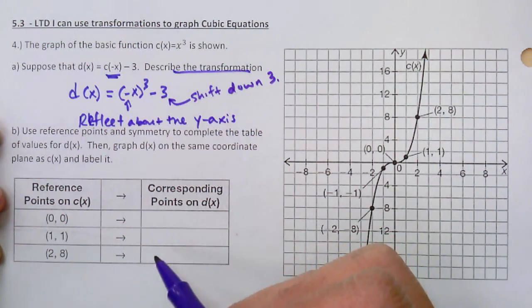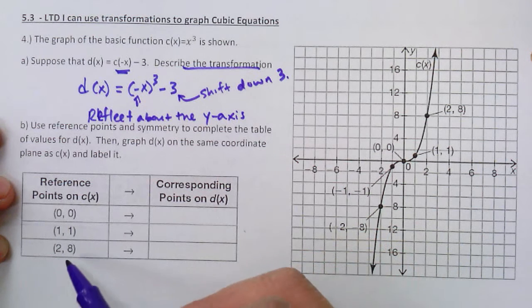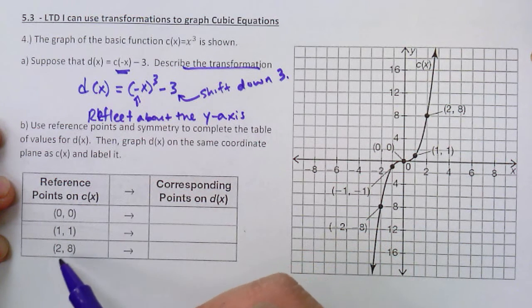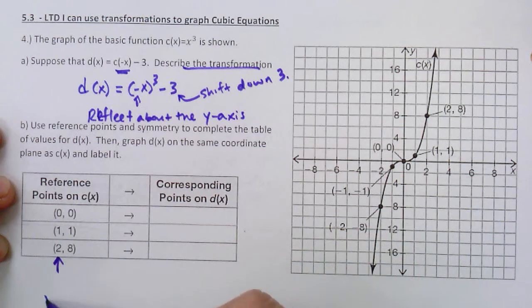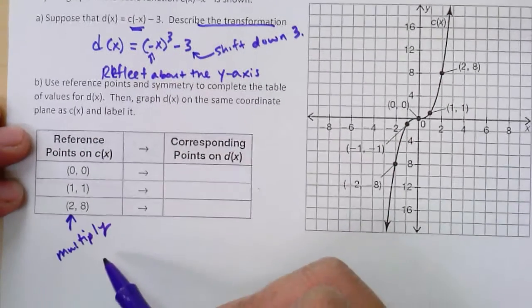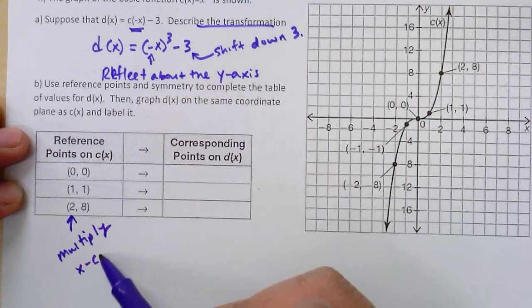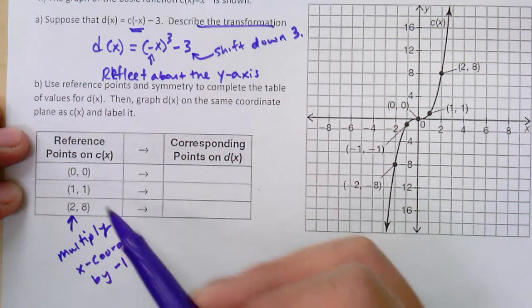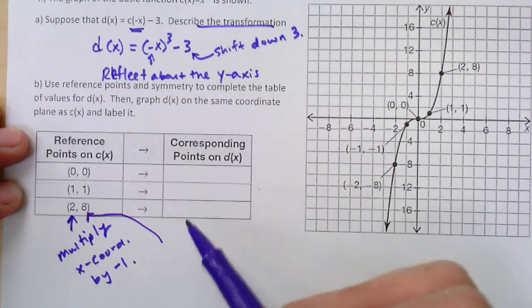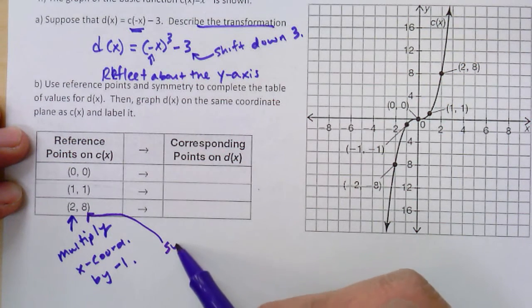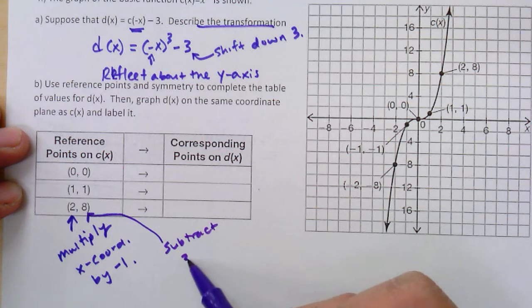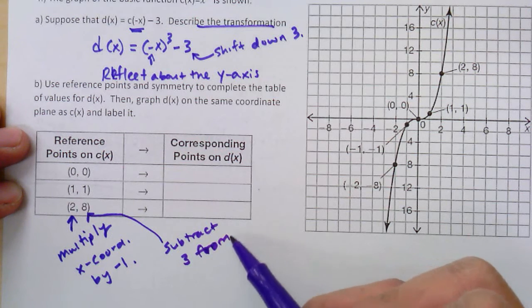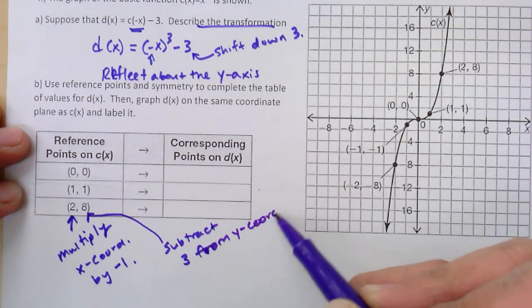How does it affect my reference points? Well, the negative is to reflect about the y-axis. When you reflect about the y-axis, you're going to have to multiply the x-coordinates by negative 1. For the shift down, you're going to subtract 3 from y-coordinates.